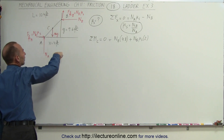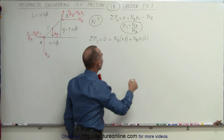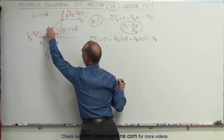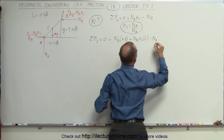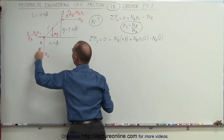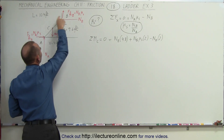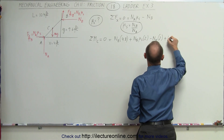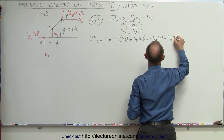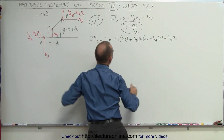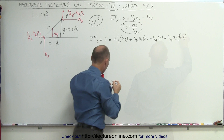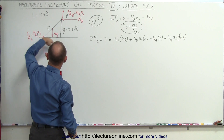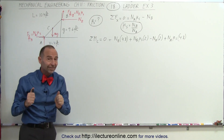Na gives a clockwise direction, so minus Na times the perpendicular distance of 2 feet. The friction force at A gives a counterclockwise direction, so plus Na × μs × 4.8 feet. Checking signs: Nb term — counterclockwise; friction at B — counterclockwise; friction at A — counterclockwise; Na — clockwise. Signs are correct.